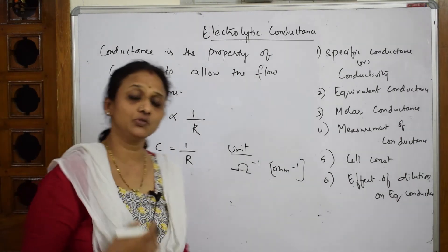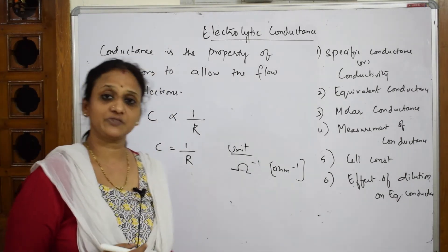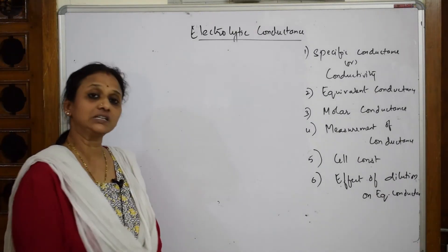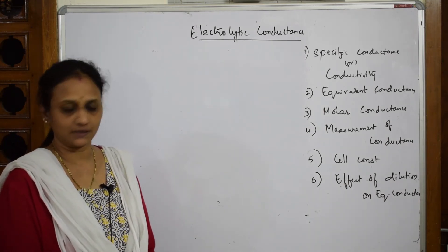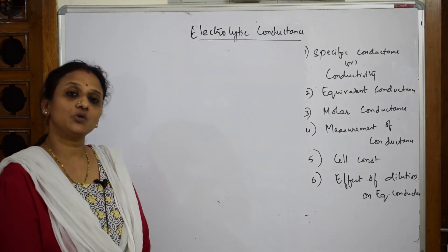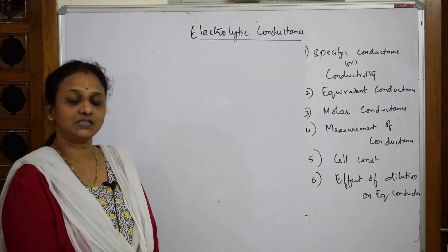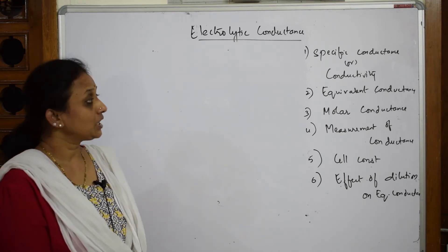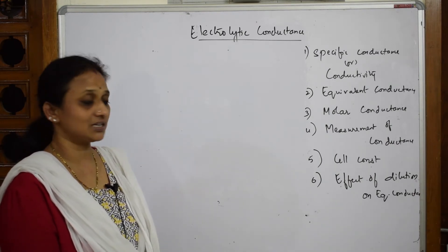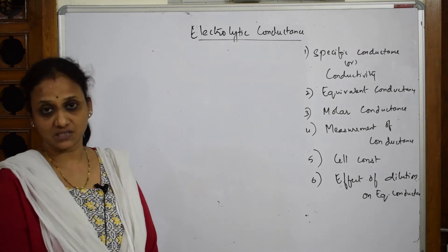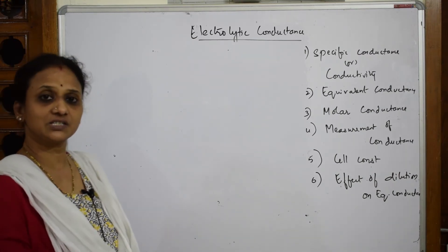Now let us gradually move into a concept called specific conductance. After learning that C is equal to 1 by R, since conductance is the inverse of resistance, let us first define specific resistance and then go back to that concept.